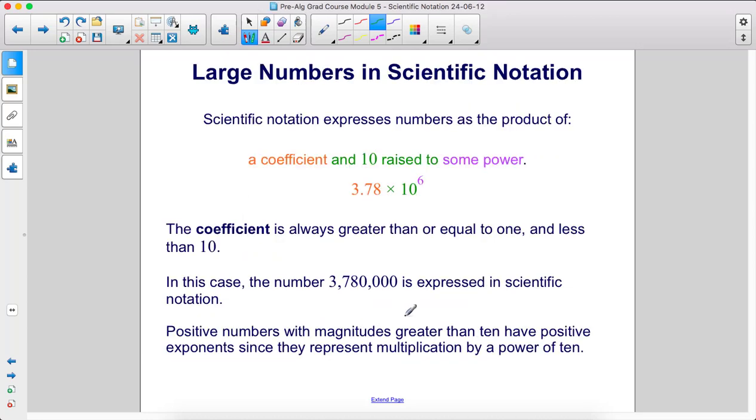Scientific notation expresses numbers as the product of a coefficient, like this 3.78, times 10 raised to some power. The coefficient is always greater than or equal to 1, but less than 10. In this case, the number 3,780,000 is expressed in scientific notation. Positive numbers with magnitudes greater than 10 have positive exponents, since they represent multiplication by a power of 10.